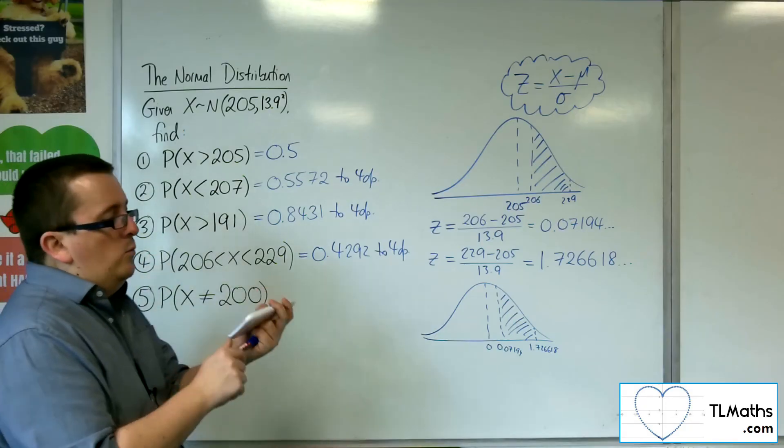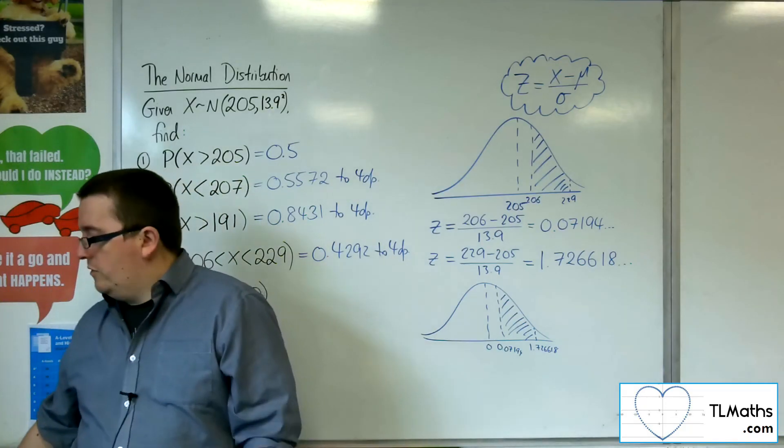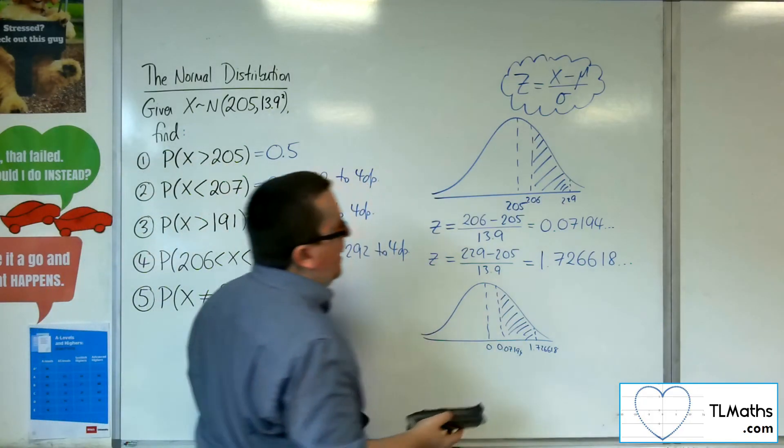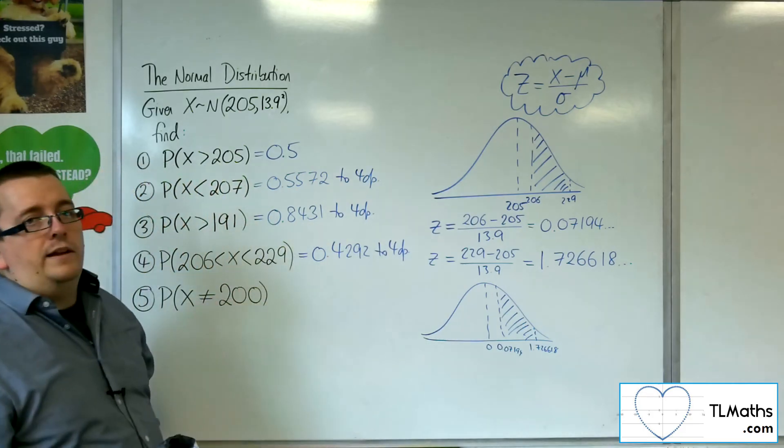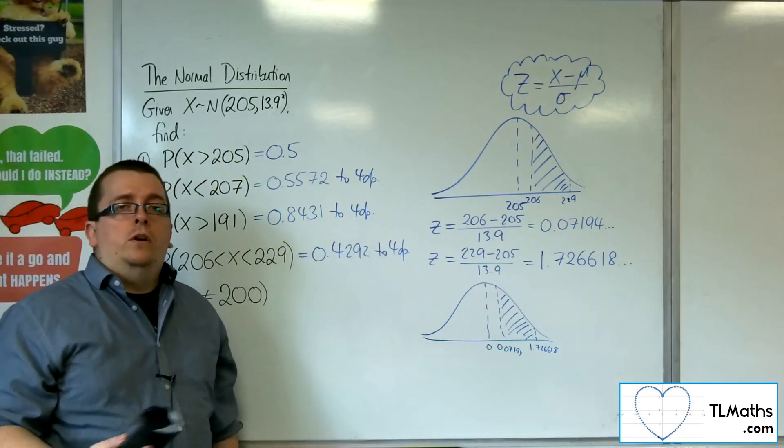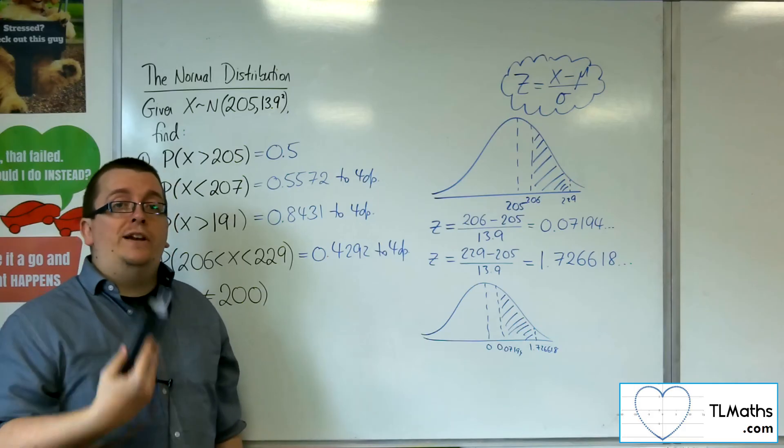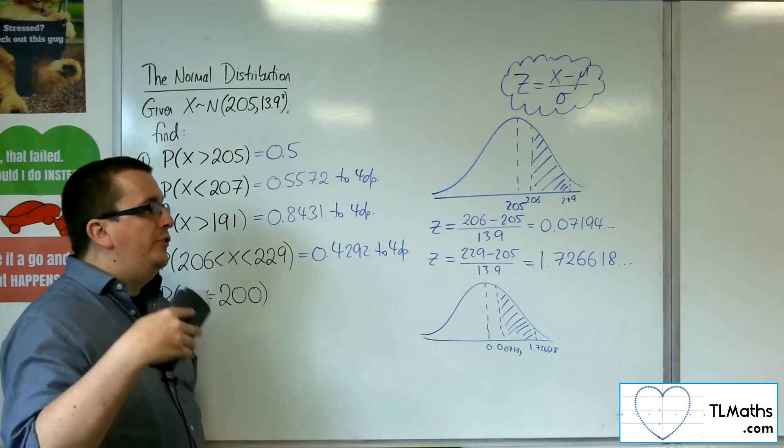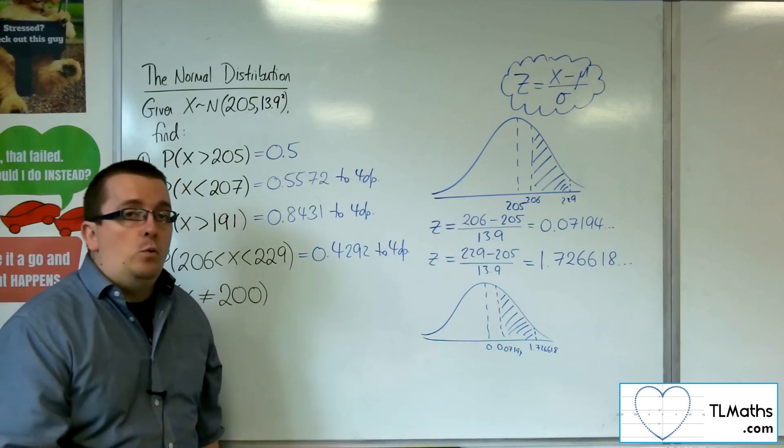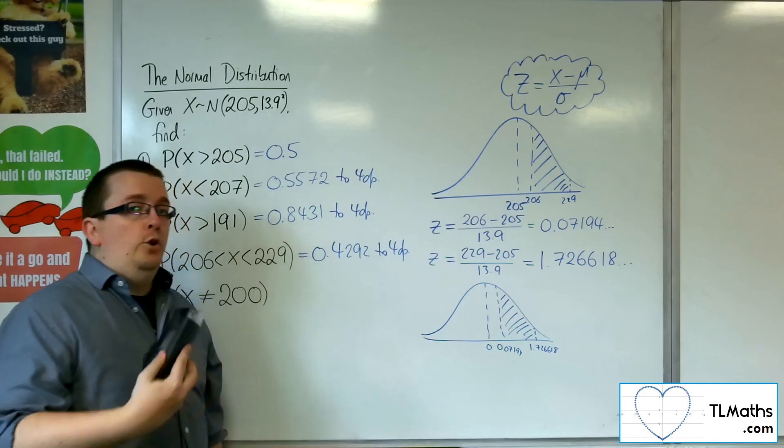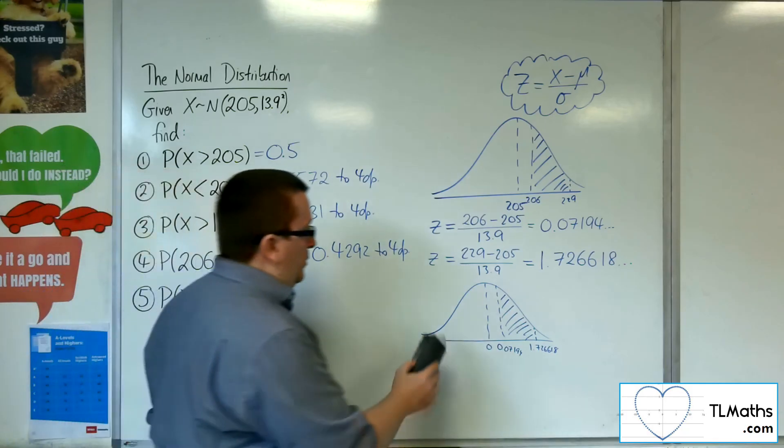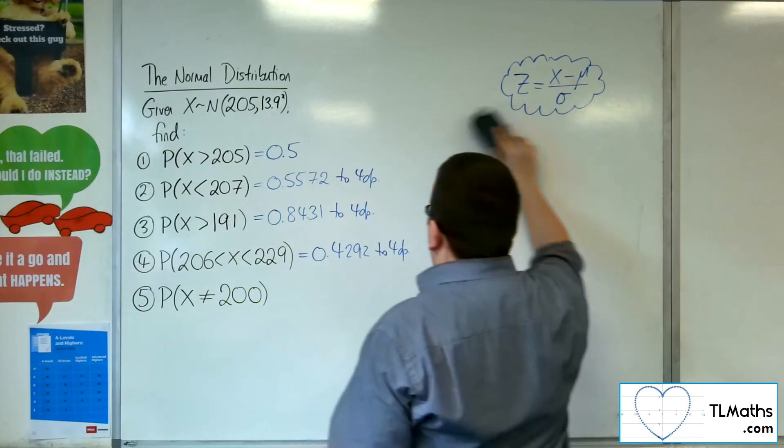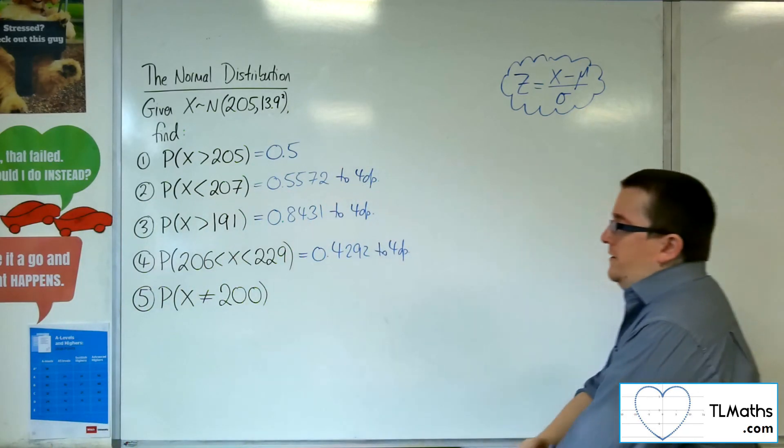Now you may be thinking, why is Jack going through finding the z-value, drawing a curve, shading in these areas, when I can just go straight on the calculator? It won't mean anything to you if you just learn it as just a calculator rote activity. You need to understand what's going on so that when the problem arises of having to work backwards, you're going to be in the best place possible in order to solve those problems. So there is method to my madness.